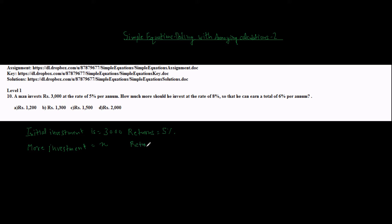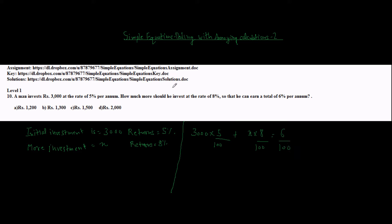The returns for this unknown x are 8%. Now coming back to forming equations: total returns from Rs 3000 is 3000 × 5/100, and total returns from x rupees is x × 8/100. This should equal 6/100 of the total amount invested, which is 3000 plus x, because 3000 was the initial investment and x is the extra investment.